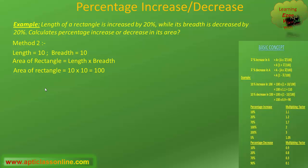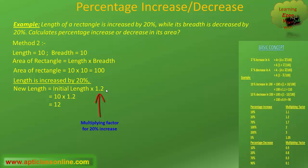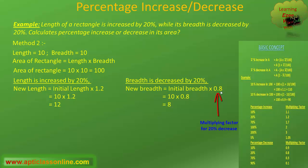Now, as per the question, there is a 20% increase in the length. So, we multiply the initial value by 1.2, as 1.2 is the multiplying factor for 20% increase, to get the final value of length, that is 12. And for 20% decrease in the breadth, the initial value will be multiplied by 0.8, as 0.8 is the multiplying factor for 20% decrease, to get the new breadth as 8. So, the new area will be 12 into 8, that is equal to 96.